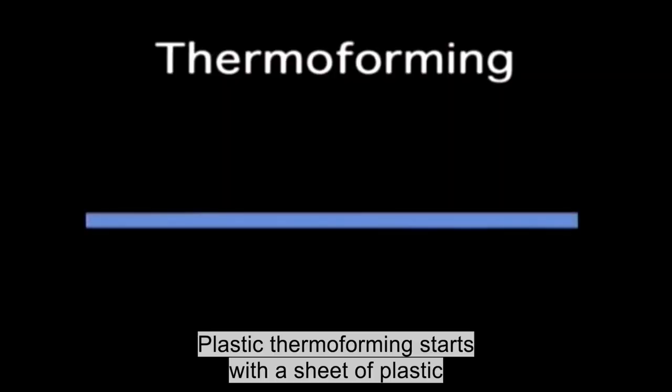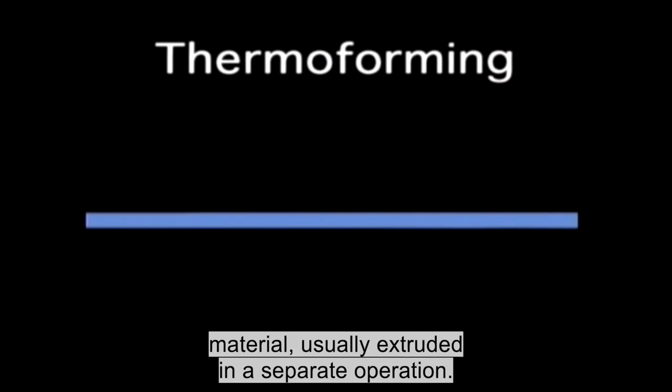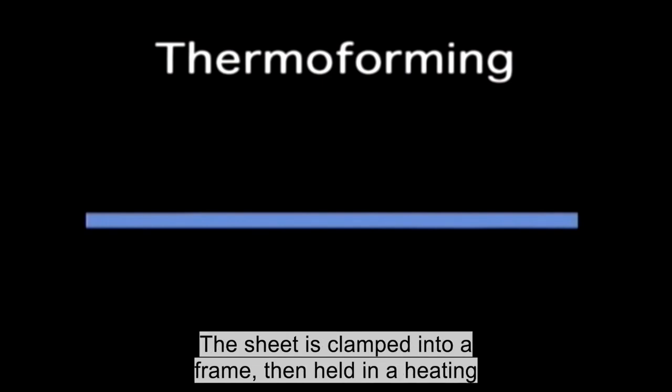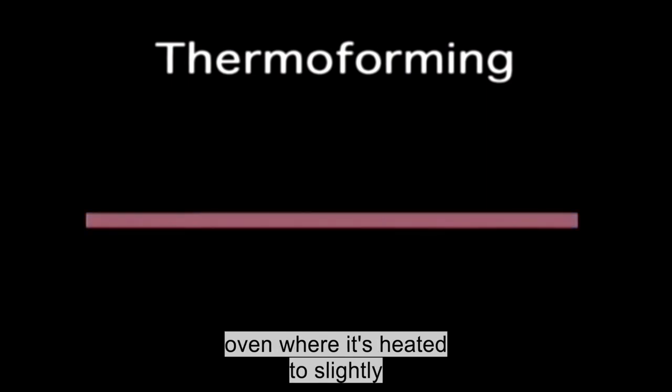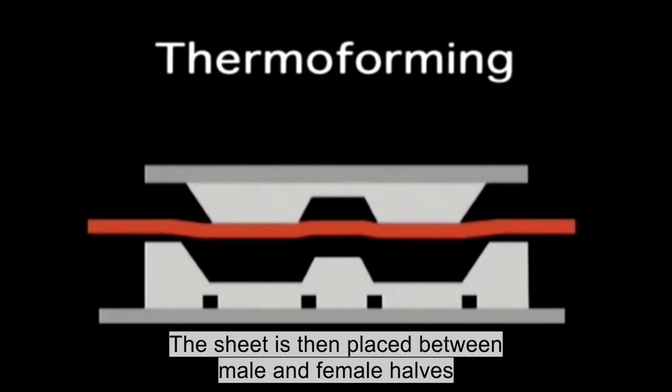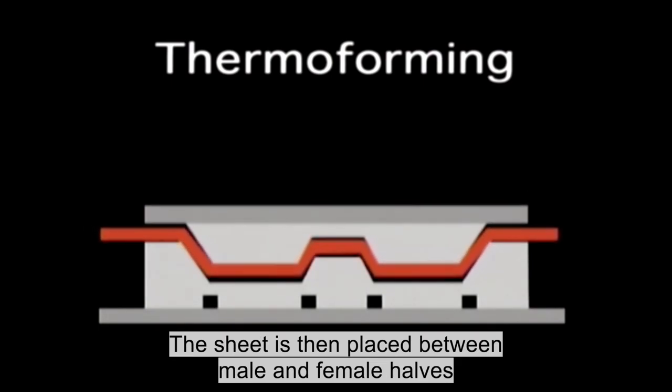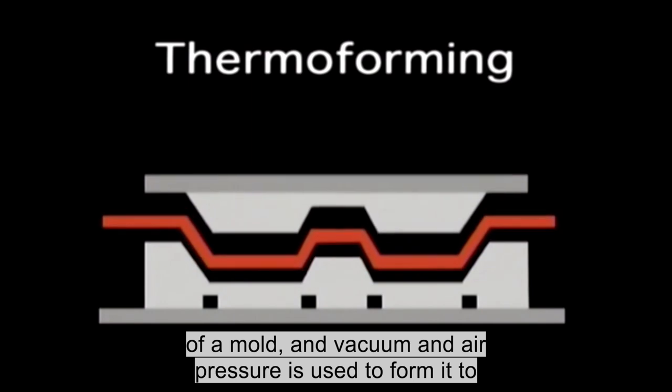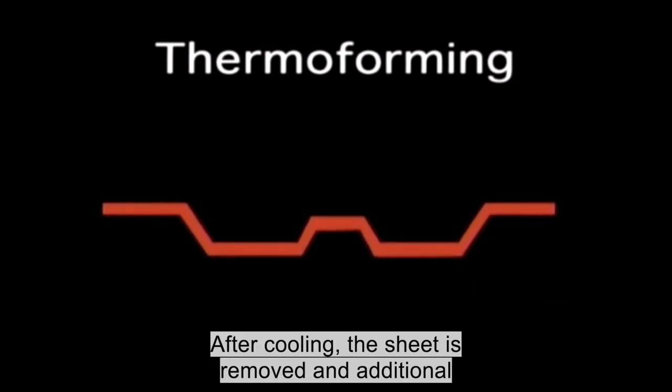Plastic thermoforming starts with a sheet of plastic material, usually extruded in a separate operation. The sheet is clamped into a frame, then held in a heating oven where it's heated to slightly above its melting point. The sheet is then placed between male and female halves of a mold, and vacuum and air pressure is used to form it to the mold shape. After cooling, the sheet is removed and additional trimming is done.